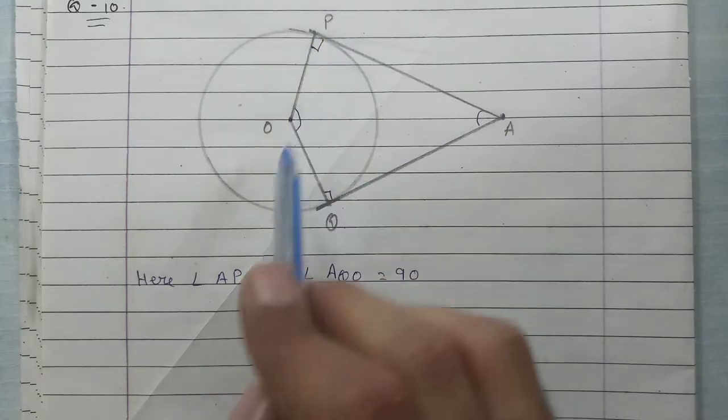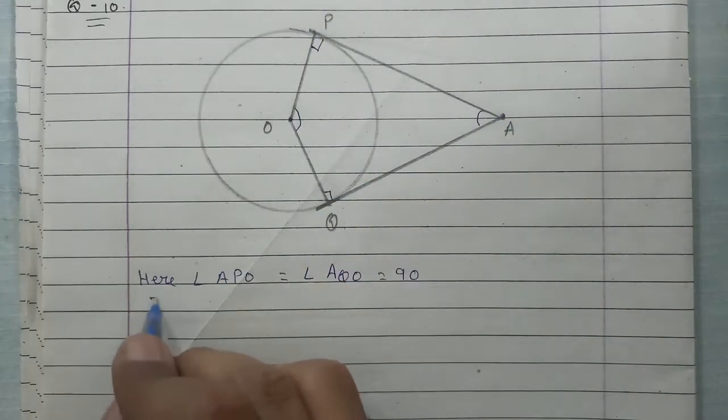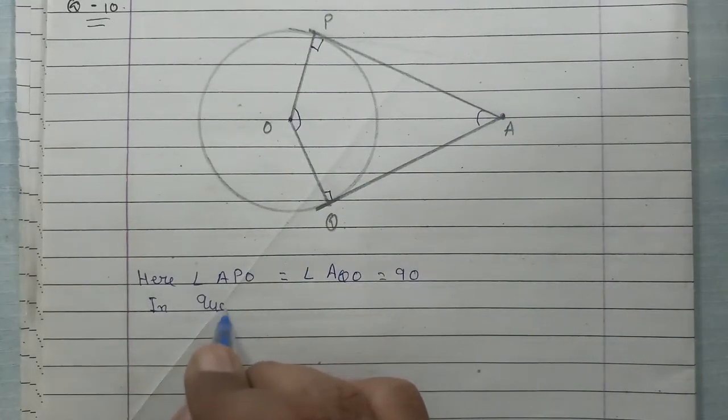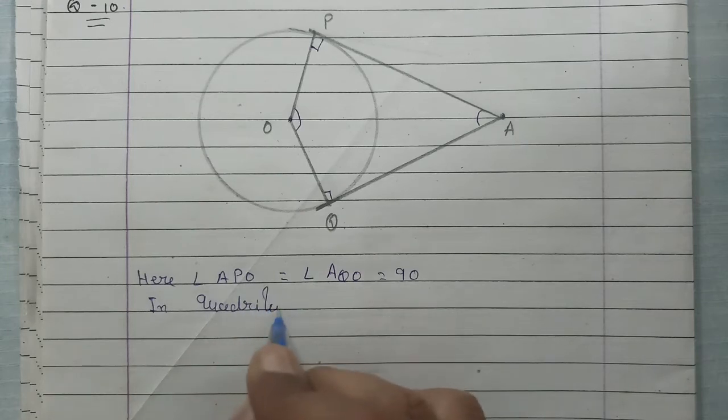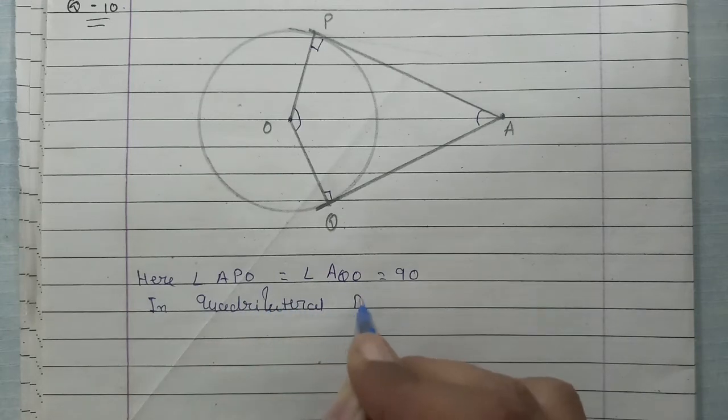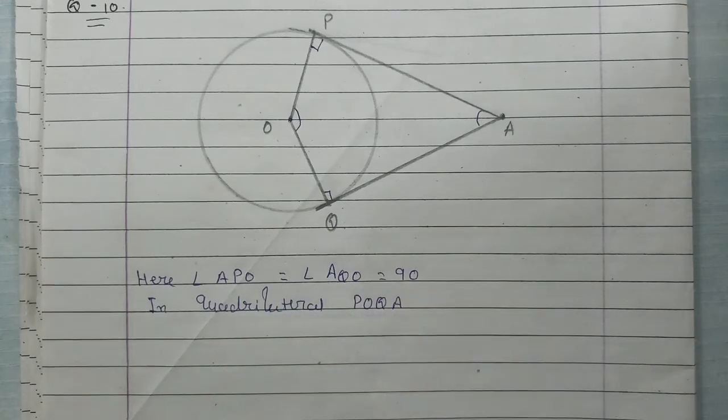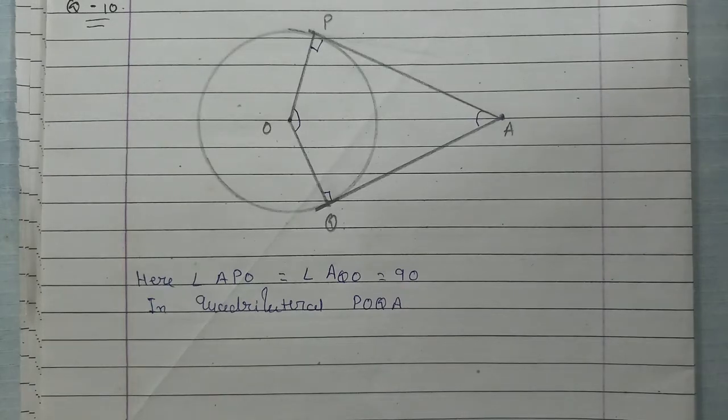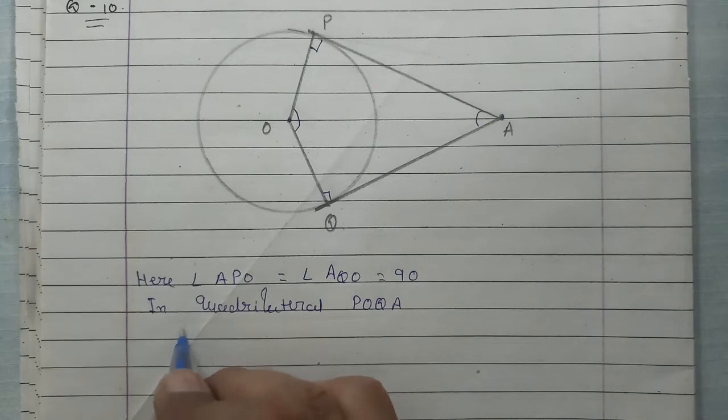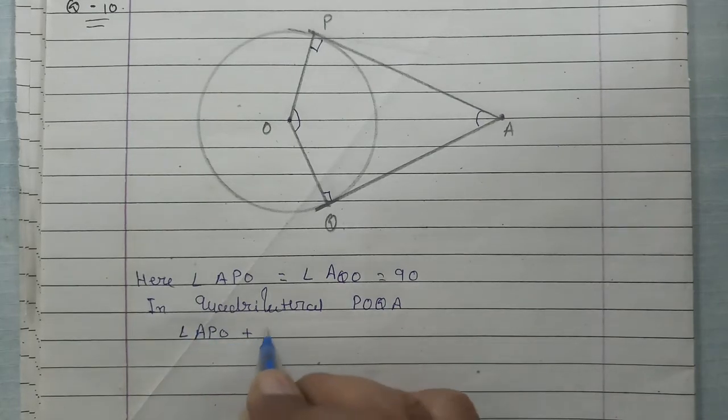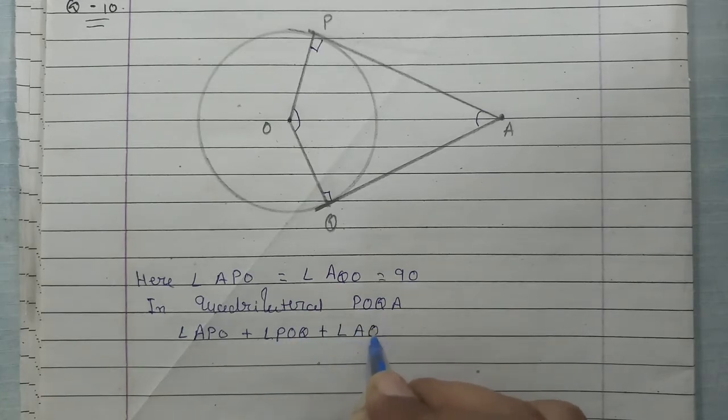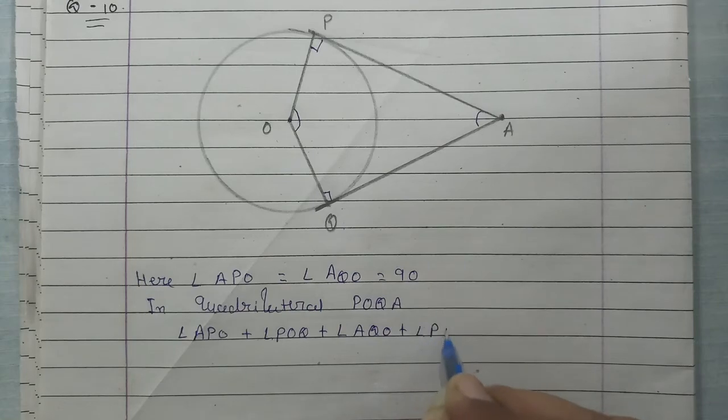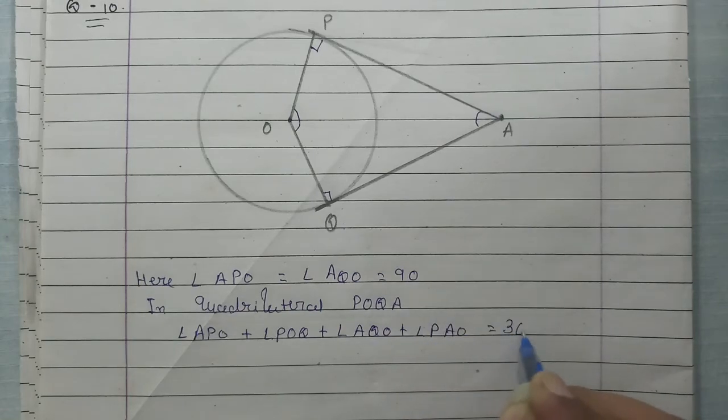In the quadrilateral PORA, the sum of all four angles equals 360 degrees: angle APO + angle POQ + angle QOA + angle PAO = 360.